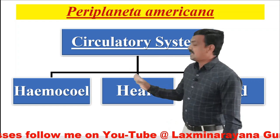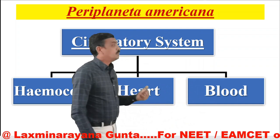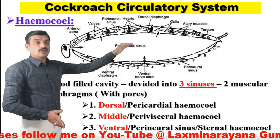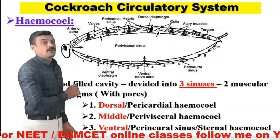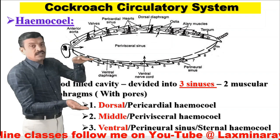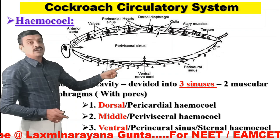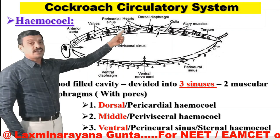The circulatory system of Periplaneta americana is studied under three headings: the hemocoel, heart, and blood. The blood in cockroach is filled in cavities. The cavity of the cockroach is divided into three sinuses by two muscular diaphragms: the dorsal diaphragm and the ventral diaphragm, which divide the body into three regions — dorsal sinus, middle sinus, and ventral sinus.